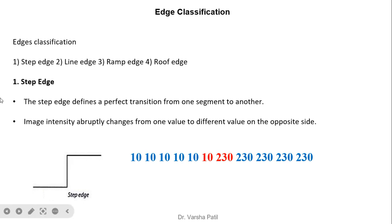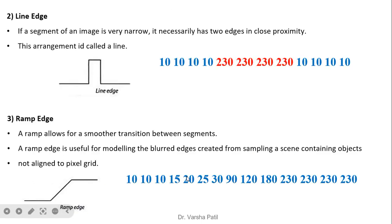In a step edge, we see values like 10, 10, 10 — a continuously constant value, which is a smooth low-frequency region. After that, there is a transition from 10 to 230, so the darker portion immediately becomes a brighter portion. This is a high-frequency signal. After the transition, the higher values are again continuous. The edge is the boundary between the darker and brighter portions — a change in intensity.